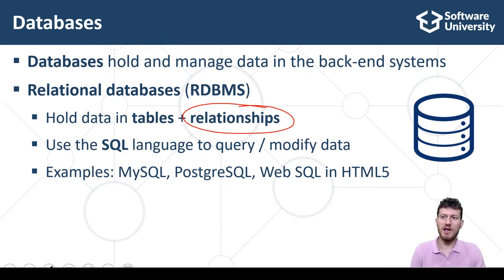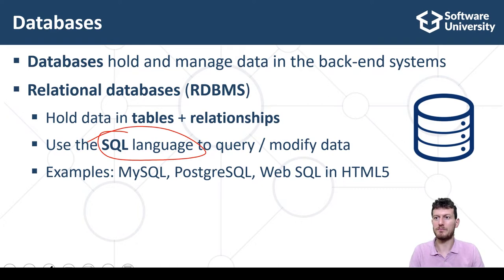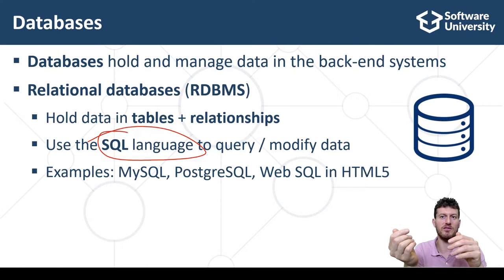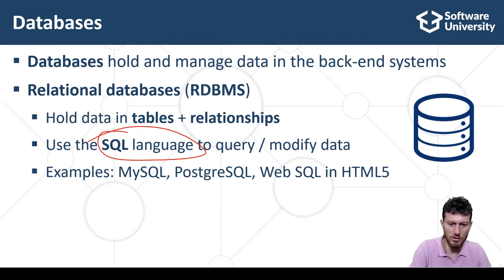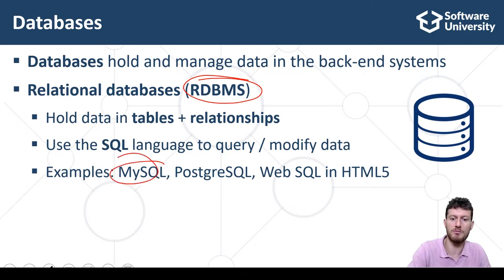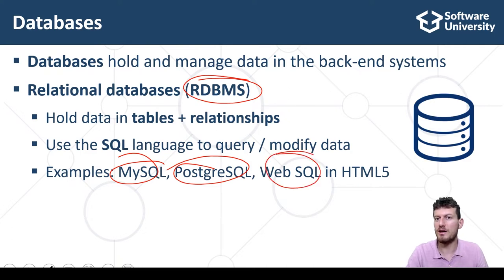In relational databases, the SQL language is used to query and modify data. SQL — Structured Query Language — is a standard database query and manipulation language. It supports simple and more complex commands such as SELECT name AND price FROM products. The software packages which manage relational databases are called RDBMS — Relational Database Management Systems. Examples of RDBMS systems are MySQL, PostgreSQL, MS SQL Server, Oracle Database, and WebSQL in the HTML5 platform.